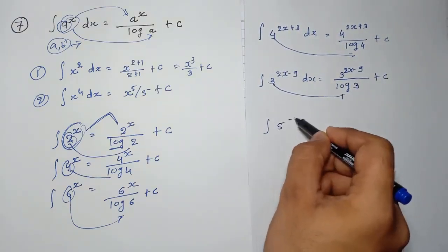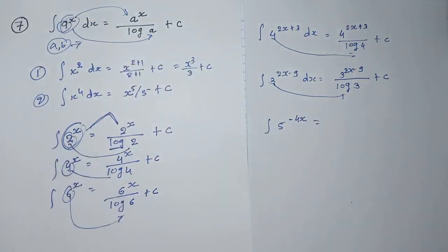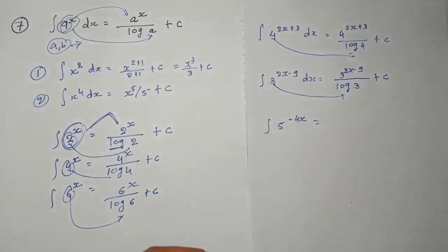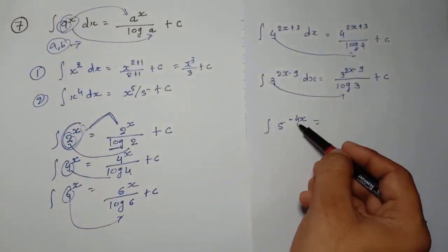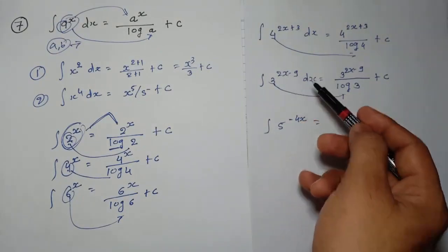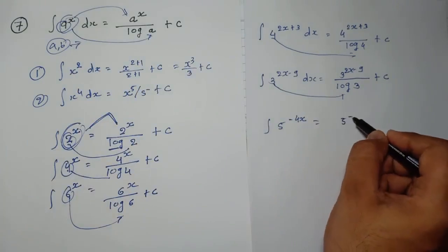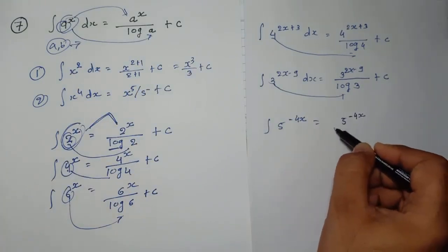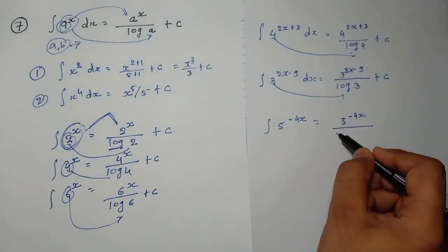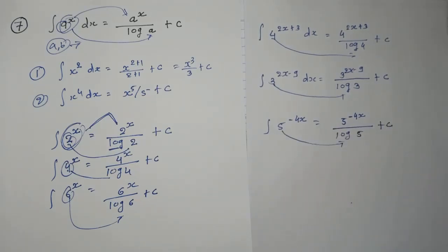Let's take: 5 raised to minus 4x. Rule number 7 applies when x is given as a power. So: 5 raised to minus 4x as it is, divide by log 5, plus c.